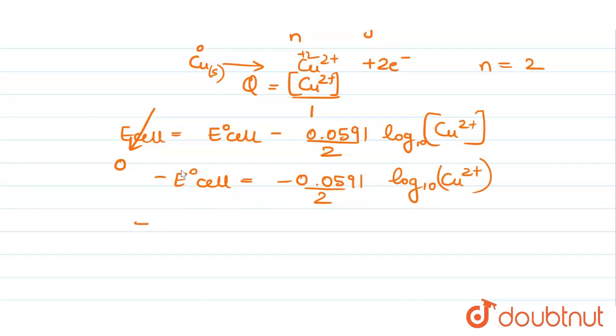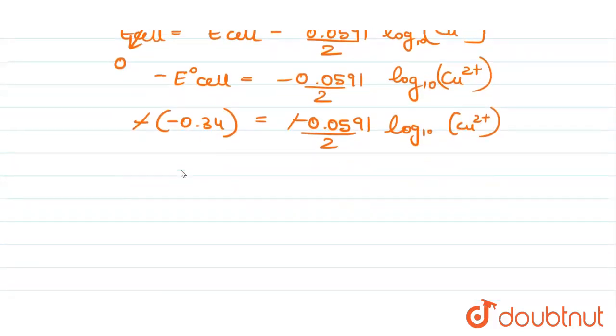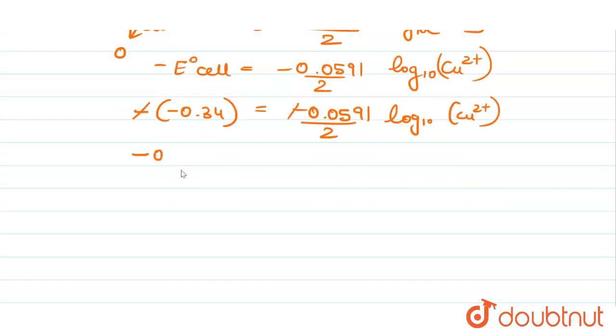Now E⁰ cell is minus 0.34. So on writing this we get, canceling, minus 0.34 × 2 upon 0.0591 equals log of Cu2+ concentration. So base 10.